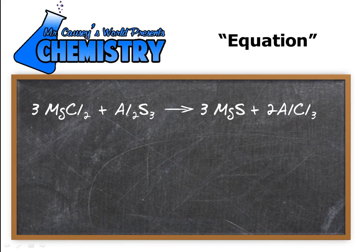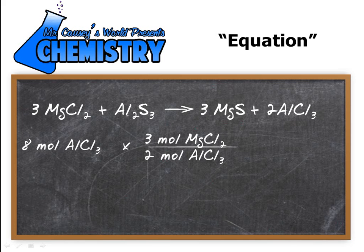Now let's look at the equation. It says to start with eight moles of aluminum chloride so write that down and then multiply that by the mole ratio. The mole ratio that we want to use is the three to two because we want aluminum chloride to cancel out and that will leave us with magnesium chloride.